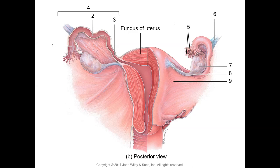The oocyte enters through the fimbria end into the infundibulum and by sweeping-like motions is guided to the ampulla of the ovarian duct. The ampulla consists of about two-thirds of the length of the uterine tube. The proximal part closer to the uterus is more narrow — that is the isthmus, labeled as number three — and the isthmus opens on the lateral superior part of the uterus. In summary: number one is the infundibulum, two is the ampulla, three is the isthmus, four is the uterine tube, five is the fimbriae, six is the suspensory ligament, seven is the ovary, eight is the ovarian ligament, and nine is the broad ligament.